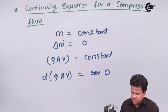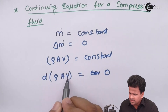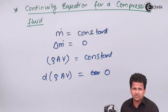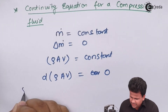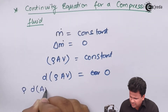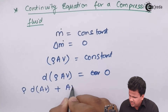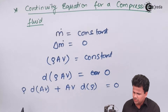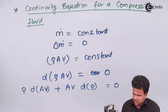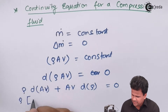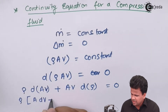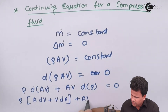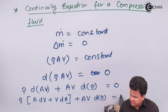We will keep one term constant at a time. Taking A times V as constant, we take the derivative of rho, giving rho times d(AV) plus AV times dρ equals zero. Expanding d(AV) further gives: A·dV plus V·dA plus AV·dρ equals zero.